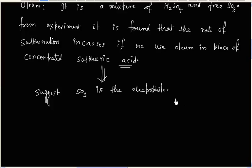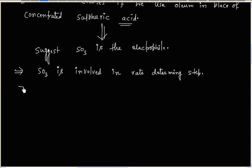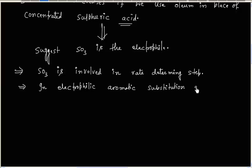This is because in electrophilic aromatic substitution reaction, attack of the electrophile is the rate-determining step (RDS). So SO₃ must be involved in the rate-determining step, which is why it acts as the electrophile.